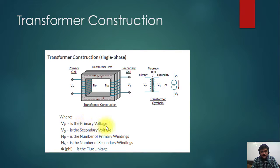VP is the primary voltage, VS is the secondary voltage, and NP is the number of primary windings, NS is the number of secondary windings, phi is the flux linkage. So this is the explanation.